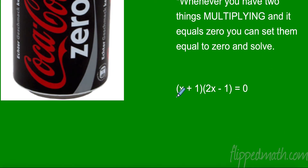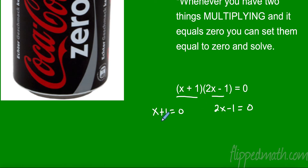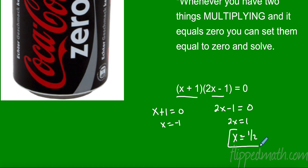I have two binomials and they equal zero. I don't know which one is zero, but I can set them both equal to zero because of the Zero Product Property. I subtract one on this side: x equals negative one. I add one on the other: 2x equals one, divide by two, x equals one-half. That is the Zero Product Property — it allows us to solve equations where the degree might be higher than just one. It's very powerful.